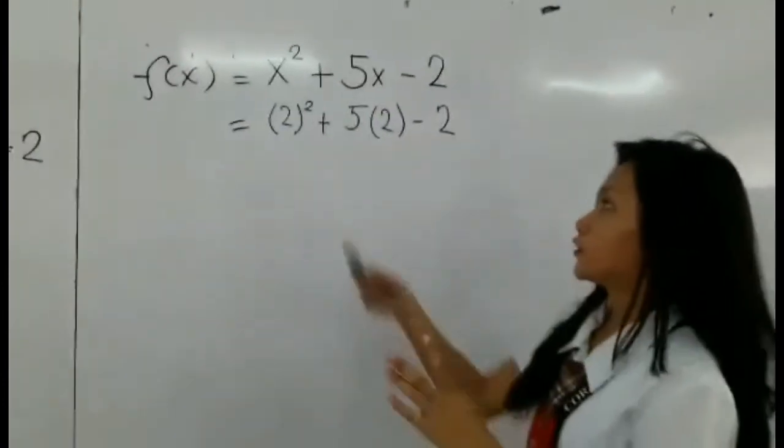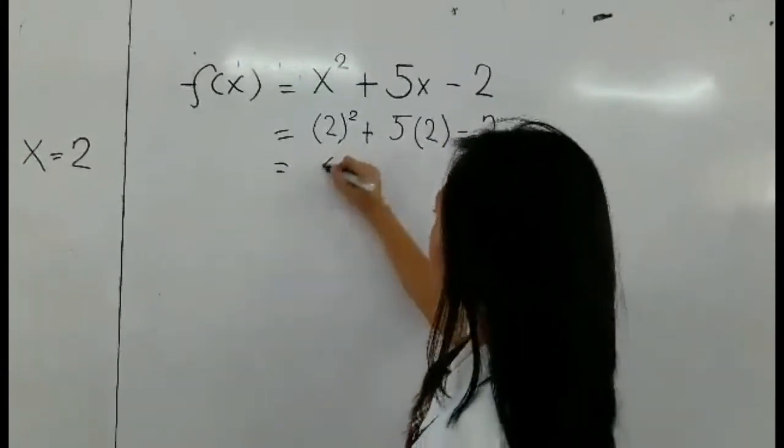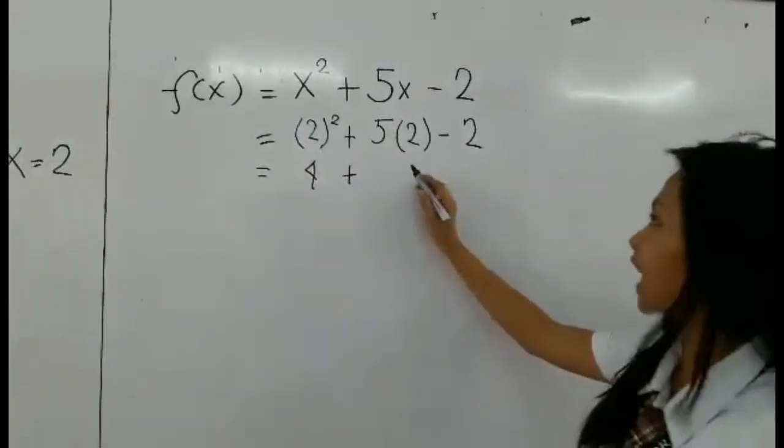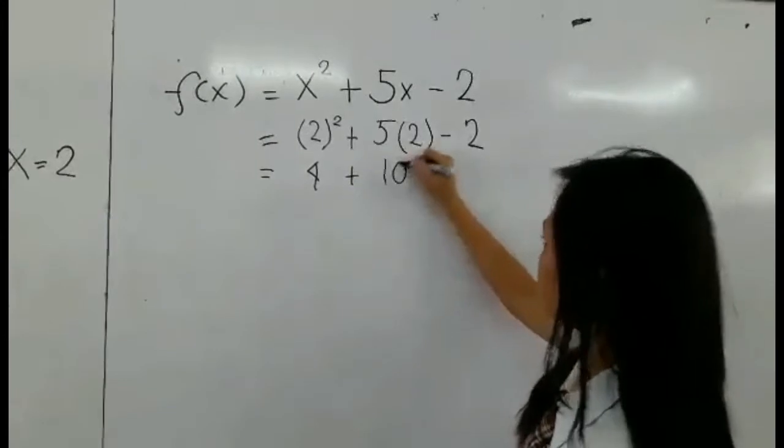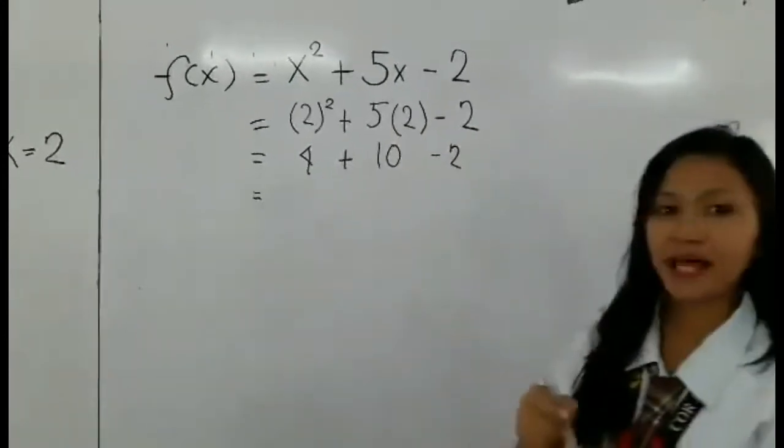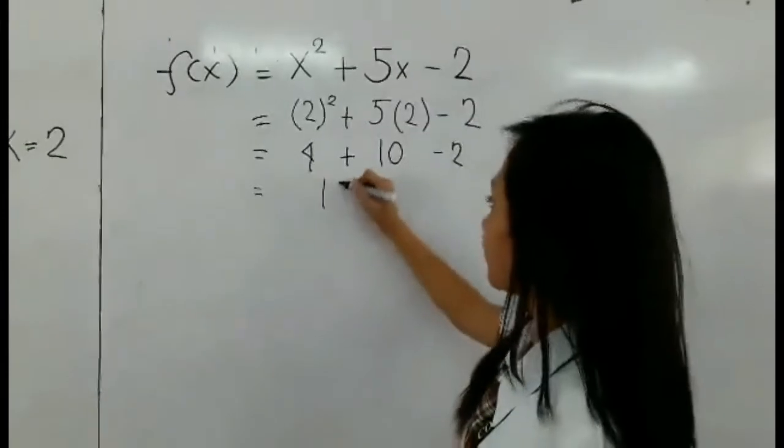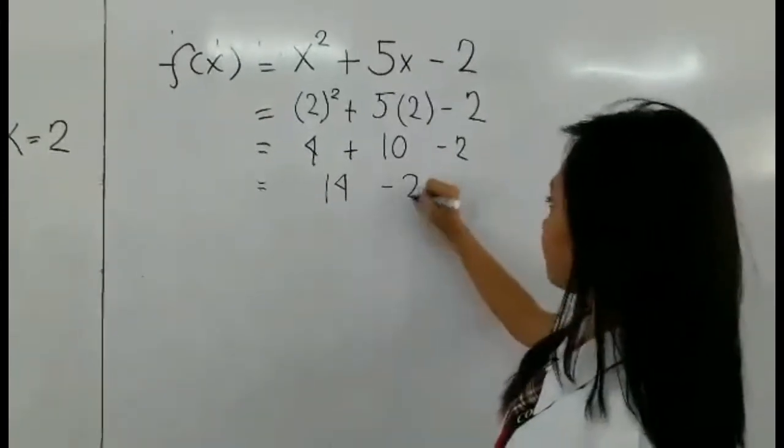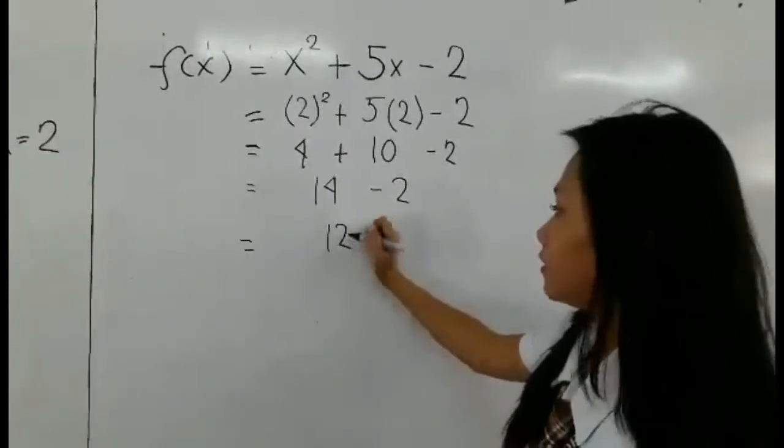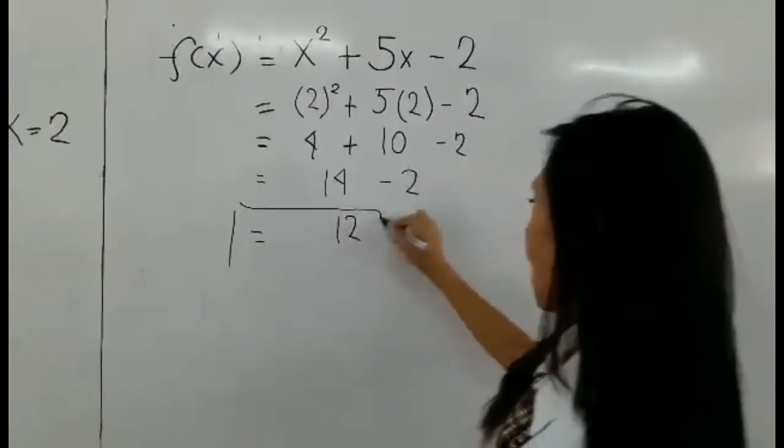So, 2 times 2 is equal to 4 plus, copy the sign here, 5 times 2 is equal to 10 minus 2. So 4 plus 10 is equal to 14, copy negative 2. 14 minus 2 is equal to 12. So here is now the answer.